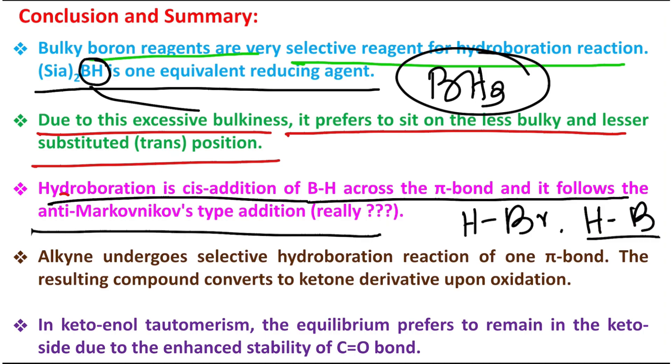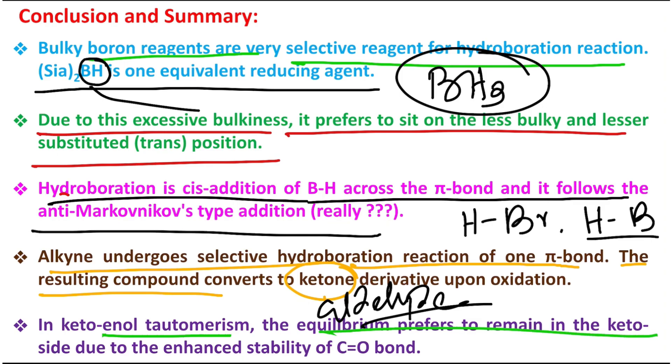Alkyne undergoes selective hydroboration reaction on one pi bond and the resulting compound converts to the ketone. No, not ketone. If you take terminal alkyne, that will be aldehyde, and if you take internal alkyne, then it will result in ketone. In keto-enol tautomerism, the equilibrium prefers to remain in the keto side due to the enhanced stability of carbon-oxygen double bond.